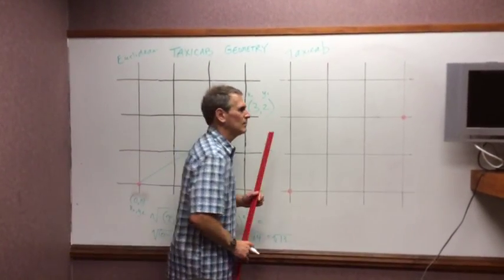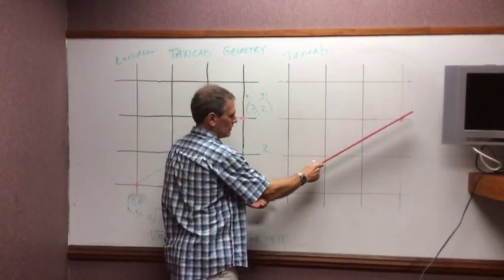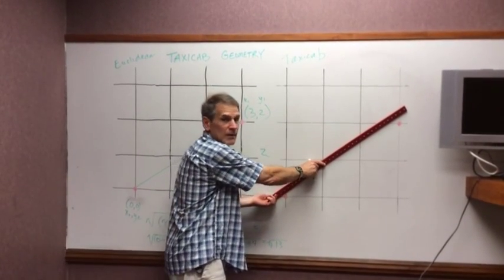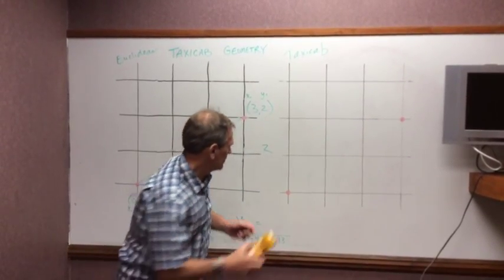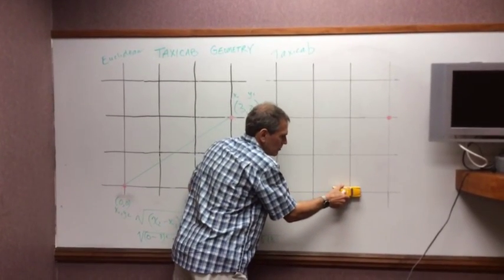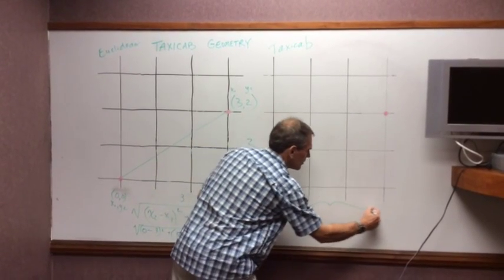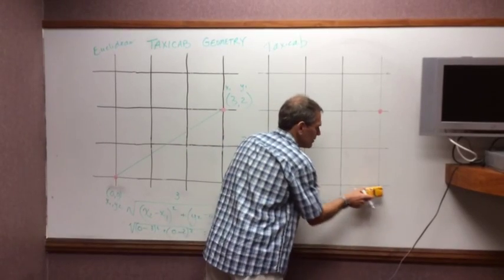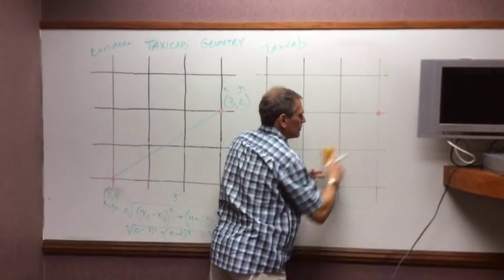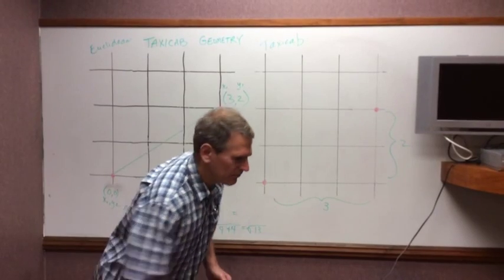We've got to navigate ourselves horizontally and vertically to these two points. In Taxi Cab, find the distance between this point and this point. We can't use a diagonal this time. So we've got to start here and count 1, 2, 3. This is a distance of 3. And then the Taxi Cab turns and we go up. 1, 2. So we have a distance here of 2.